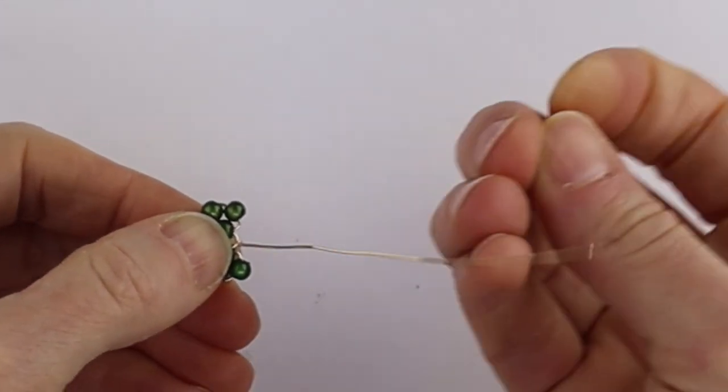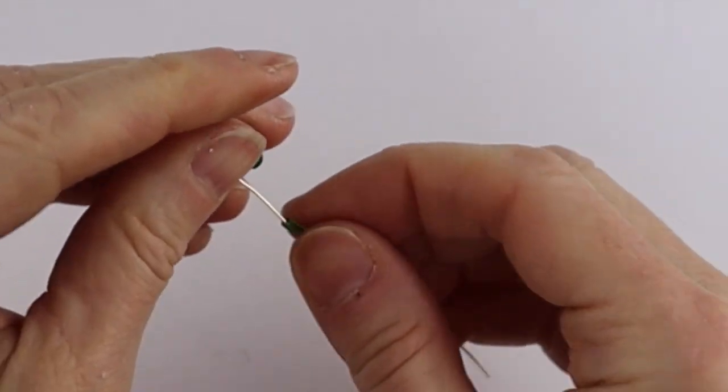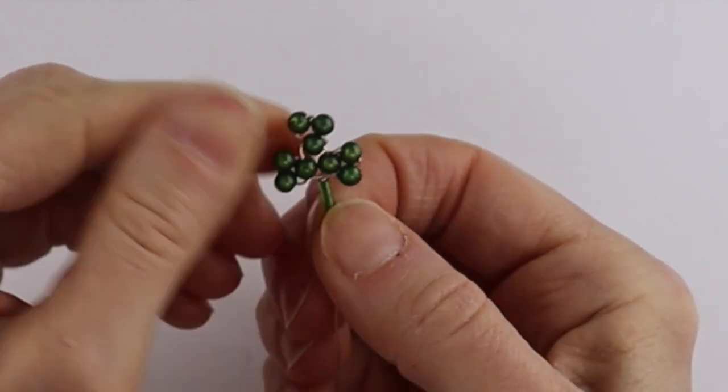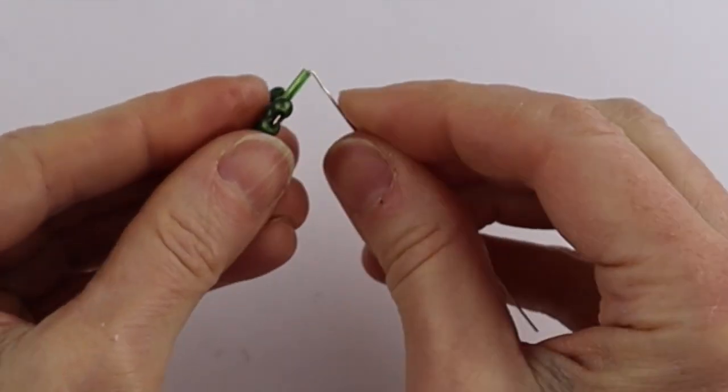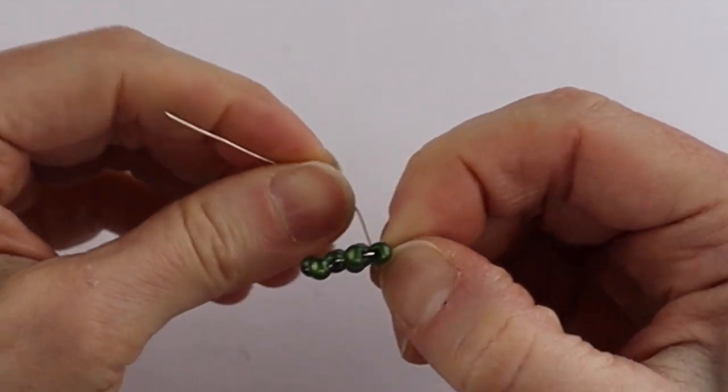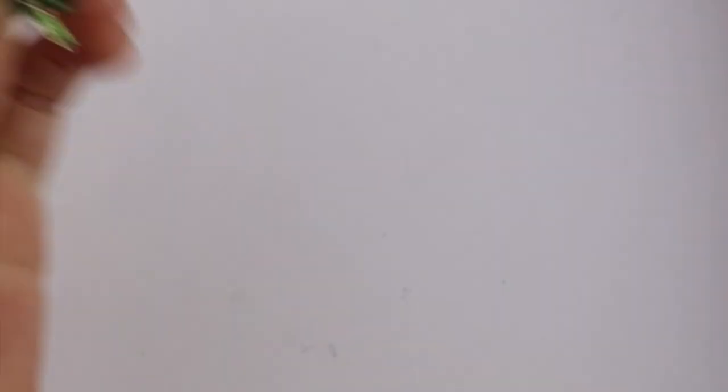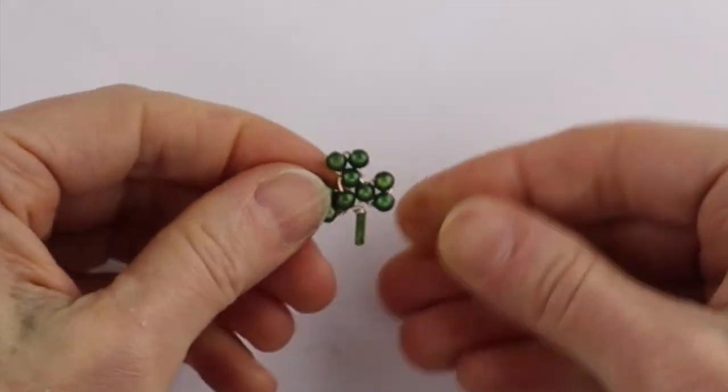Then we're going to take the bugle bead and put it on the end. Just push that right up to the top and then pull it snugly, bend it right to the back. Then just to make it more solid, hold it and wind it around the top of the bugle bead. Give it a little snip. And there you have, that's pretty well it for the shamrock.